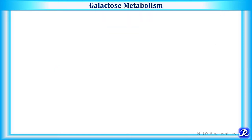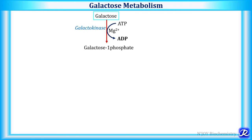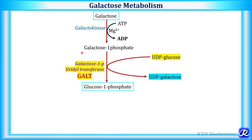In galactose metabolism, the most important source of galactose is lactose from dairy products and milk. The first important step is phosphorylation of galactose to galactose 1-phosphate by the enzyme galactokinase; ATP is the phosphate donor, resulting in ADP. The second is an exchange reaction between galactose 1-phosphate and UDP glucose, forming UDP galactose and glucose 1-phosphate, catalyzed by galactose 1-phosphate uridyl transferase, also called GALT.